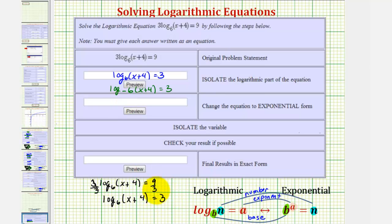Next, we're going to write the log equation as an exponential equation using the definition here by identifying the base, the exponent, and the number. Or if it's helpful, we can think of starting with the base, working our way around the equal sign to form the exponential equation. Meaning six raised to the third must equal the quantity x plus four.